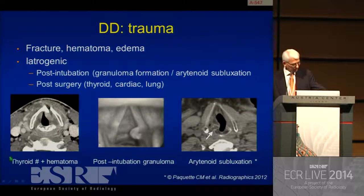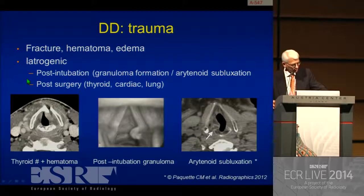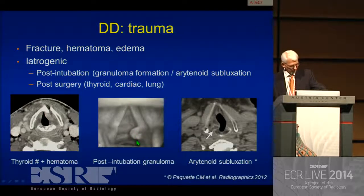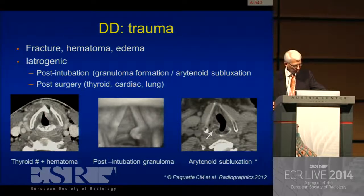Trauma can cause hoarseness. This is a patient with a fracture of the thyroid — you see this high-density area anterior in the left vocal cord, a hematoma. Of course this cord cannot move normally. There are also iatrogenic causes of trauma, especially post-intubation patients, where you can have granuloma formation. And if you have a direct trauma during long-time intubation, you can get arytenoid subluxation — an abnormal position of the arytenoid, abnormal position of the vocal cord. Other types of surgery can cause damage to the recurrent laryngeal nerve, especially thyroid, cardiac, and lung surgeries.